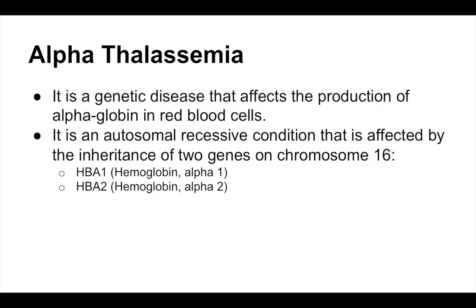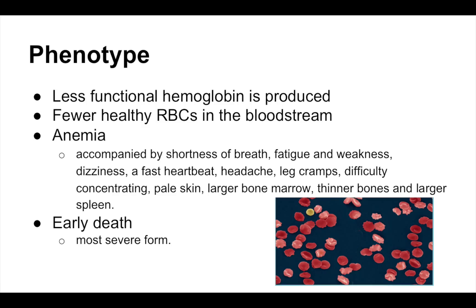Consequently, there are four alleles that are needed to produce normal amounts of alpha globin. This disease causes less functional hemoglobin to be produced, which results in fewer healthy red blood cells in the bloodstream. This also causes anemia, which can result in other symptoms. The most severe form of the disease results in the early death of the fetus in the womb.